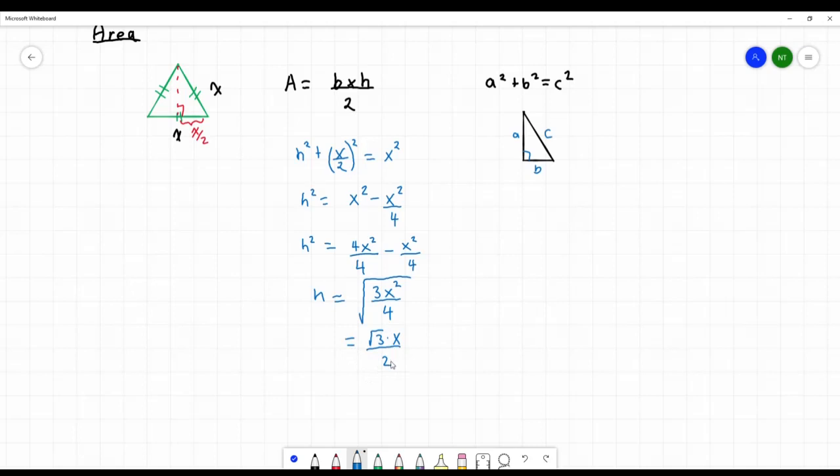So now we found our height, and we know our base is x, and we just have to divide that by 2. So our area as a function of x, let me use green and I will clean that up. So our area as a function of x is equal to our base, which is x, times our height, which we just figured out, is root 3 times x divided by 2, and all this divided by 2.